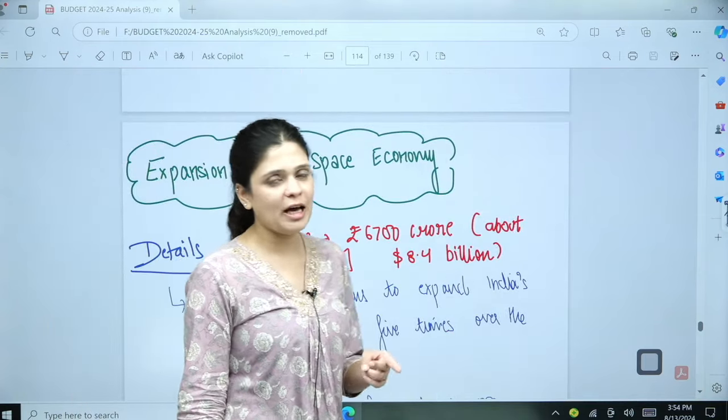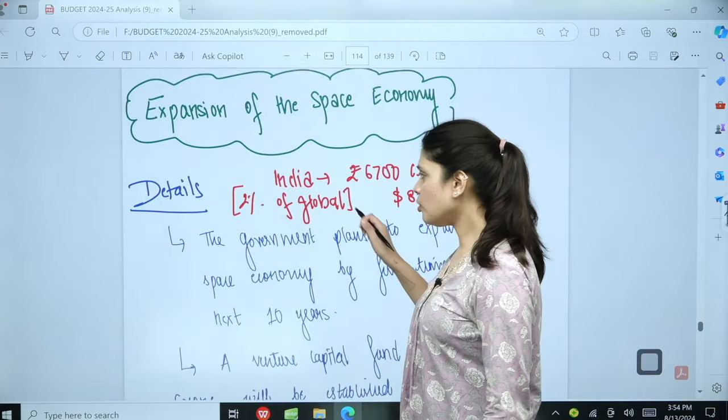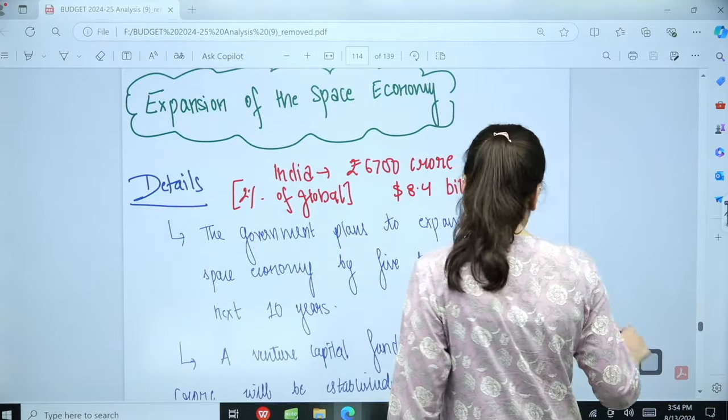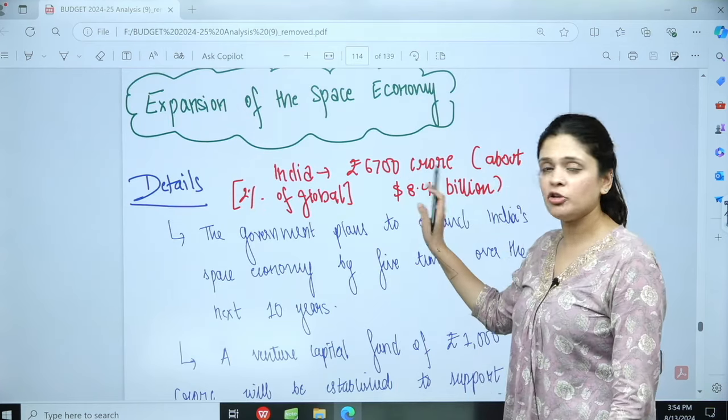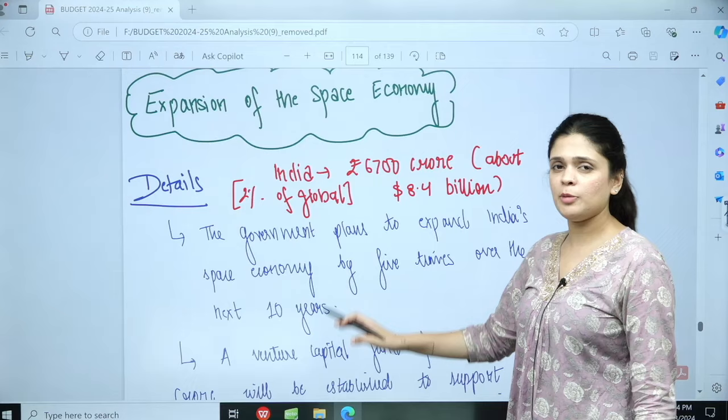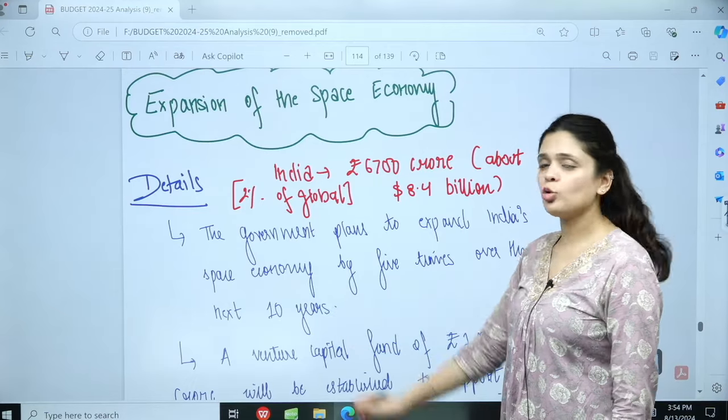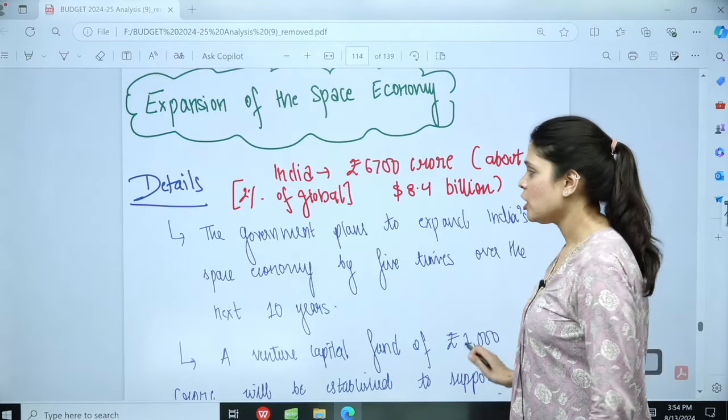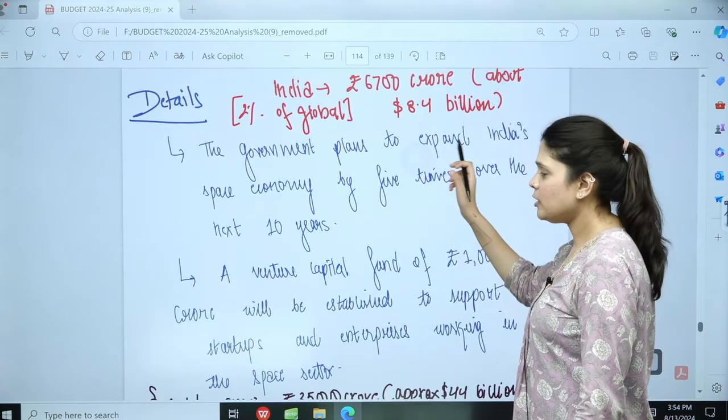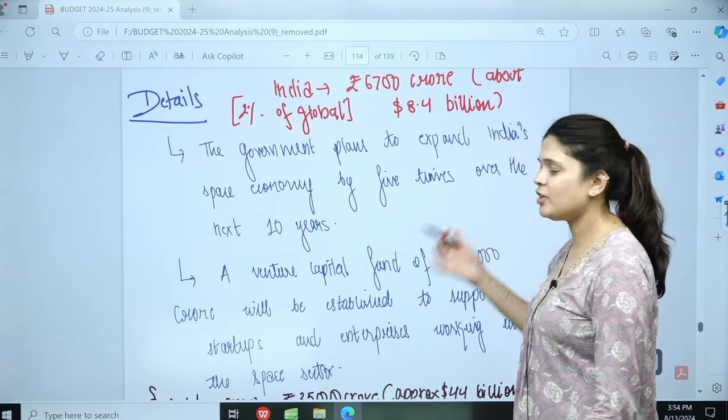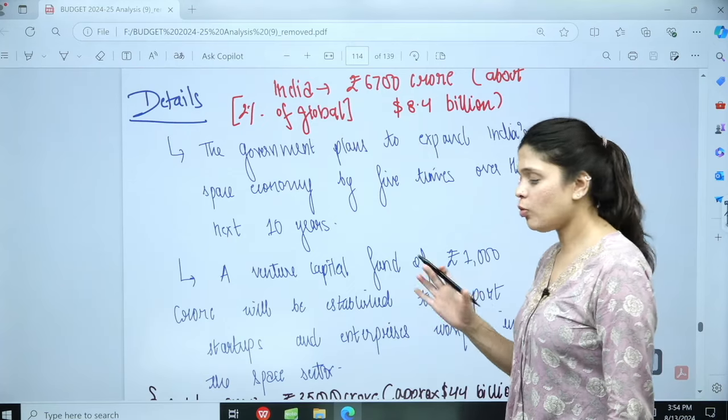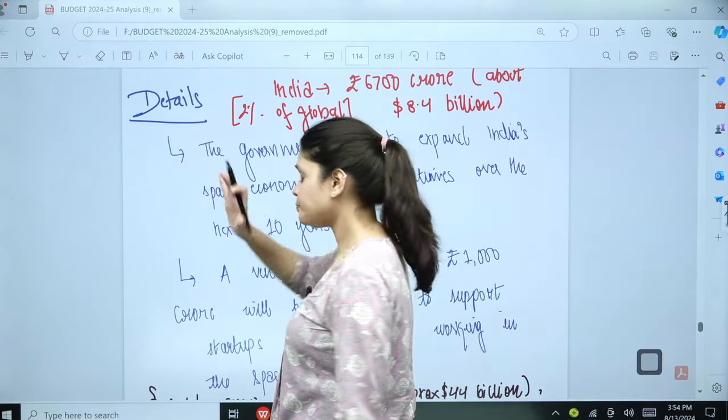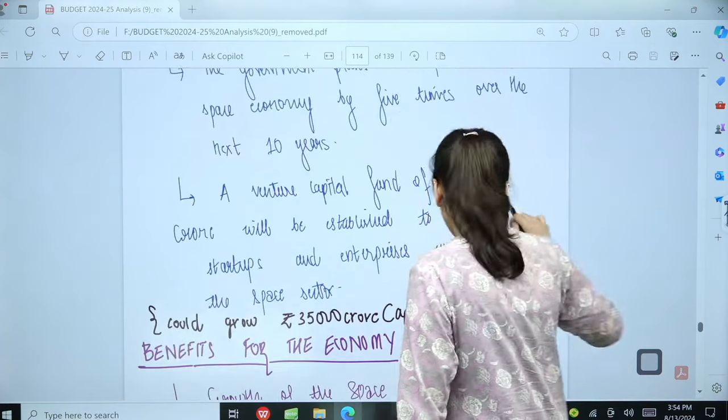The second is developing our space economy. If you talk about India right now, India has a space economy of 6700 crores, which is about 8.4 billion dollars. That is 2% of the global space economy. Now the government plans to expand this space economy by 5 times over the 10 years.